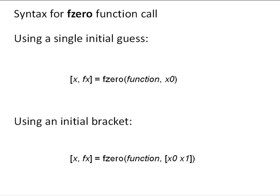So here's syntax for calling the fzero function. You can call the function in two ways. One, you can call it with a single initial guess, x0, and when you do that it'll move forward from there. We'll talk about how in just a minute, but that's a single initial guess.